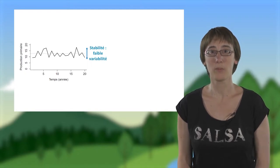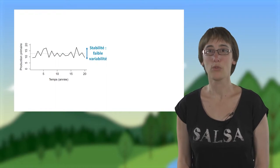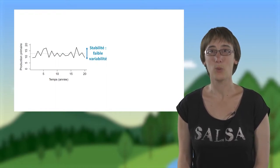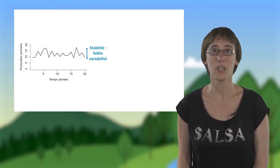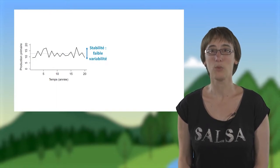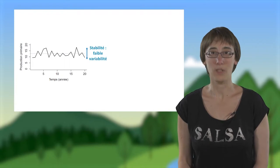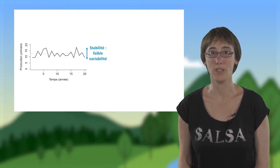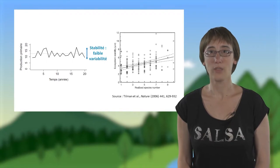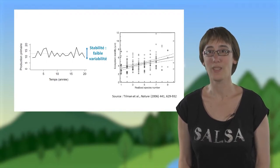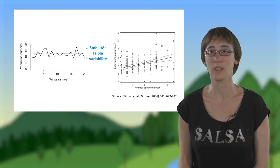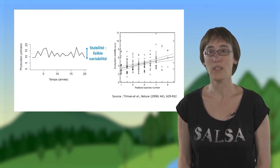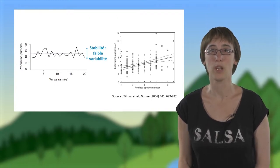En effet, la production primaire varie d'une année sur l'autre, notamment du fait des aléas climatiques. Les expériences de long terme permettent de mesurer la variabilité interannuelle de cette production primaire, et donc d'estimer la stabilité de cette production au cours du temps. Une plus forte stabilité correspond alors à une plus faible variabilité interannuelle. Ce graphique présente la relation entre la diversité des plantes et la stabilité de la production mesurée sur 10 ans dans l'expérience de Cedar Creek. Vous pouvez voir que la stabilité de la production augmente avec la diversité de plantes, un résultat aussi trouvé dans d'autres expériences de ce type.